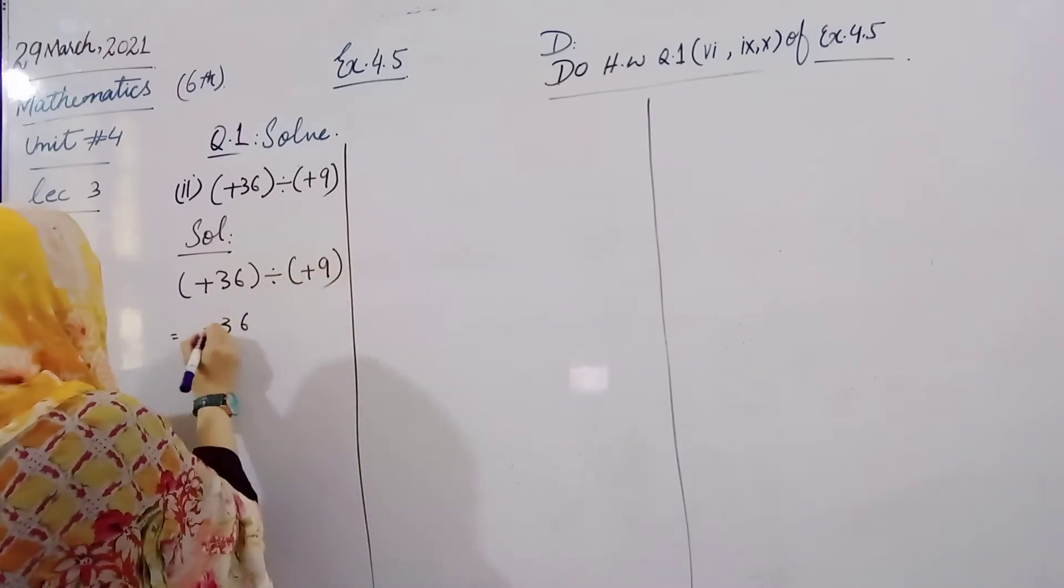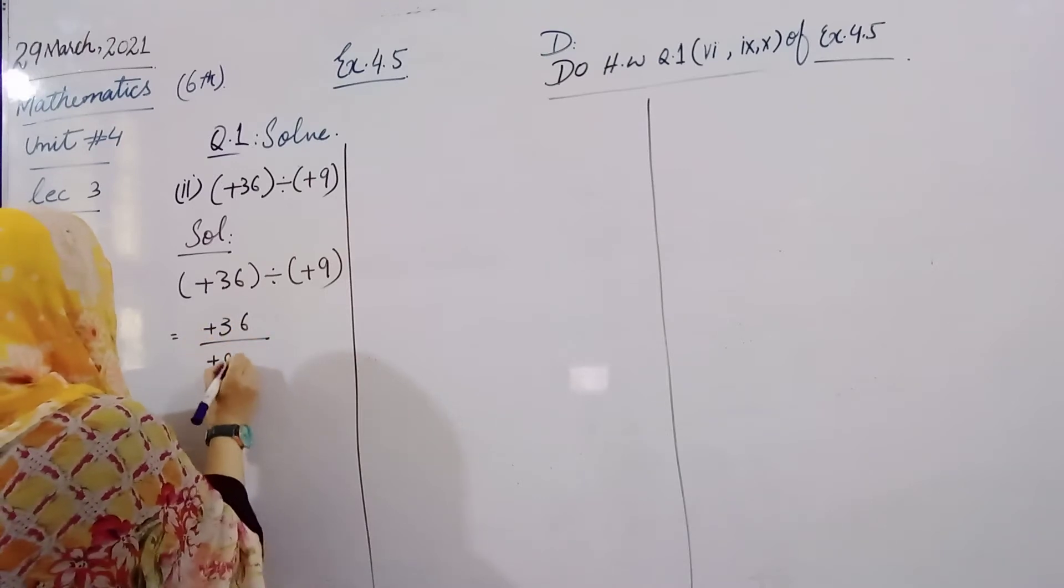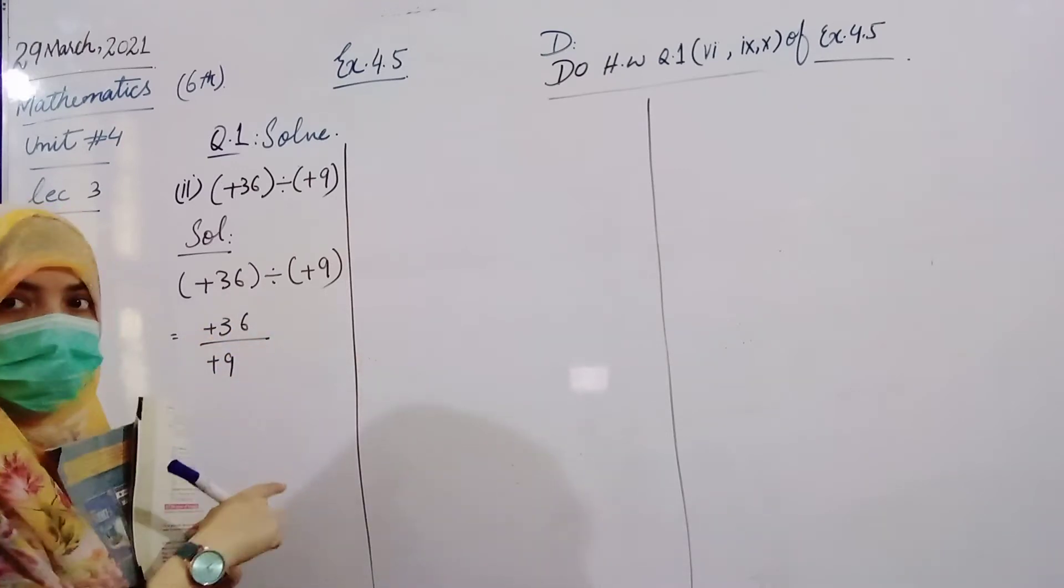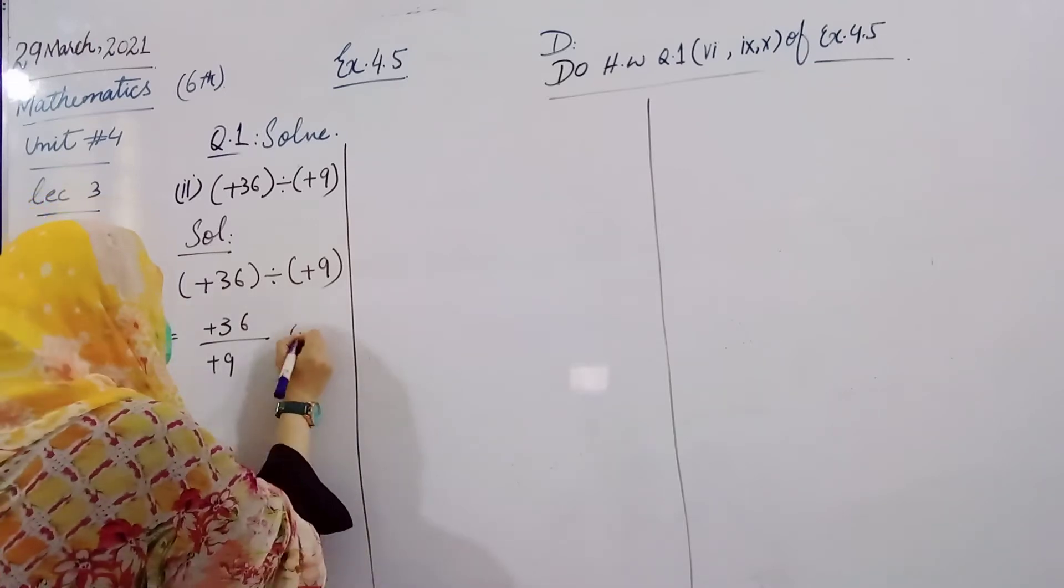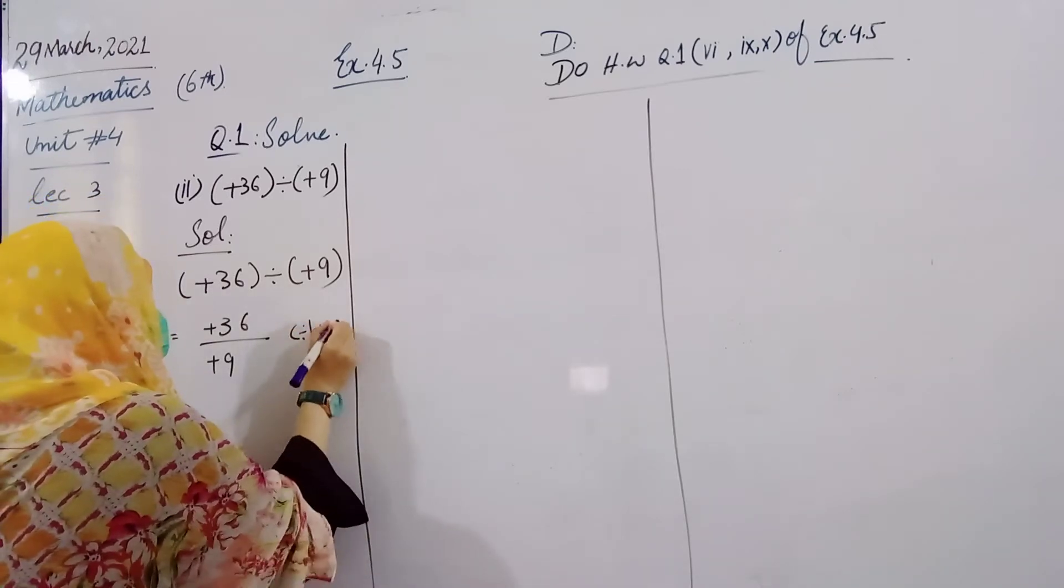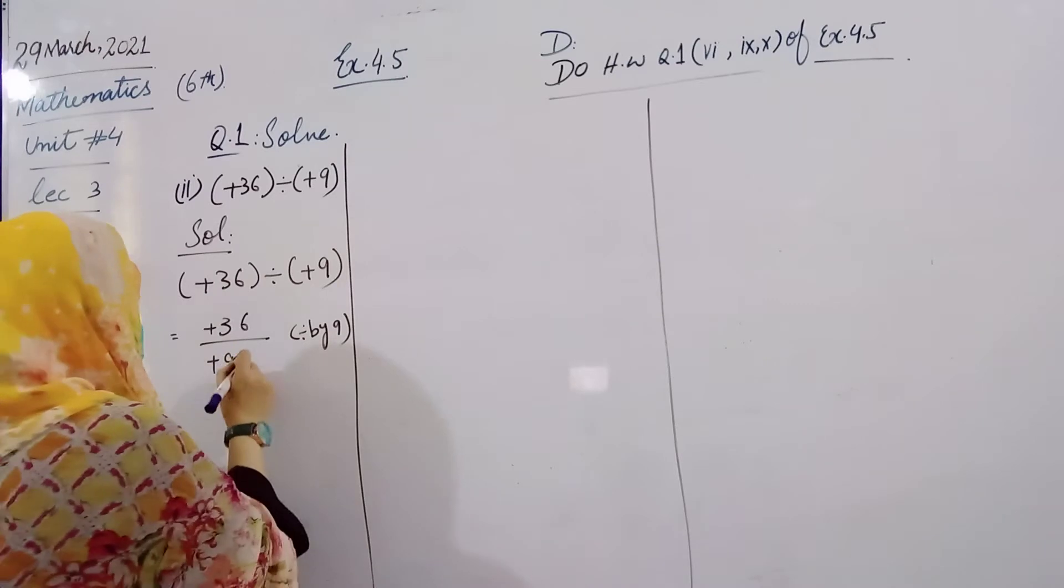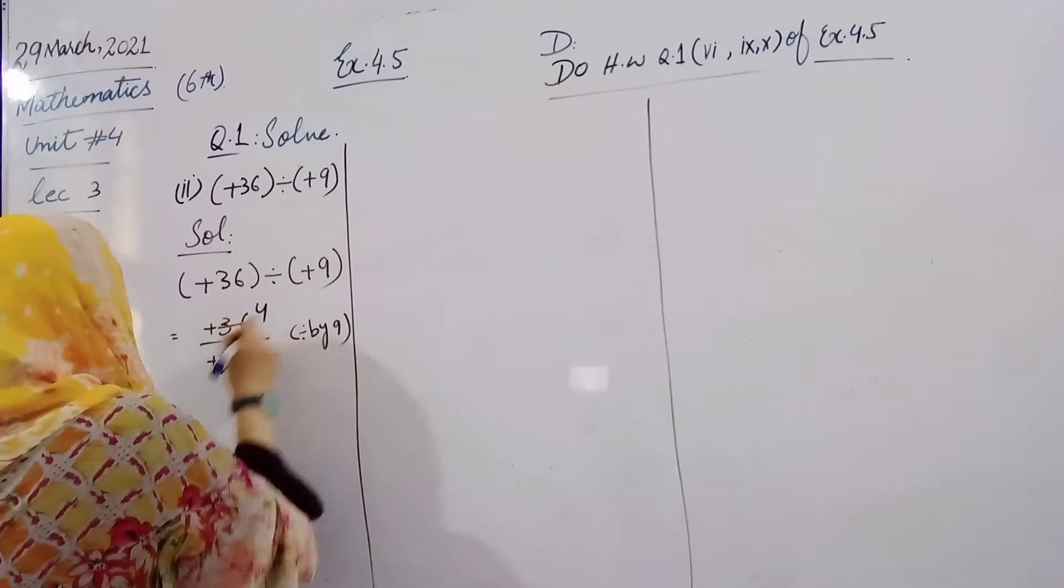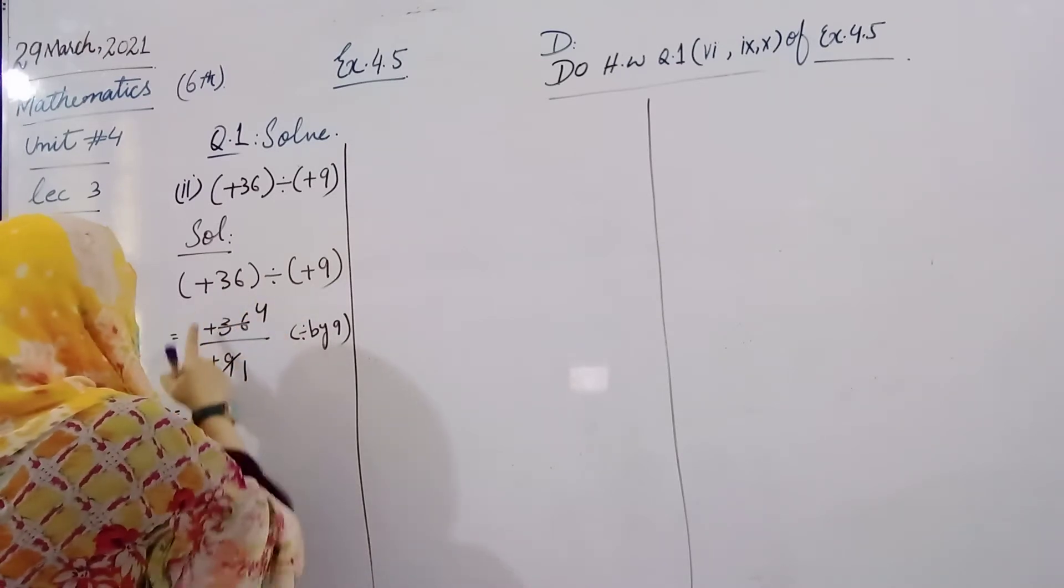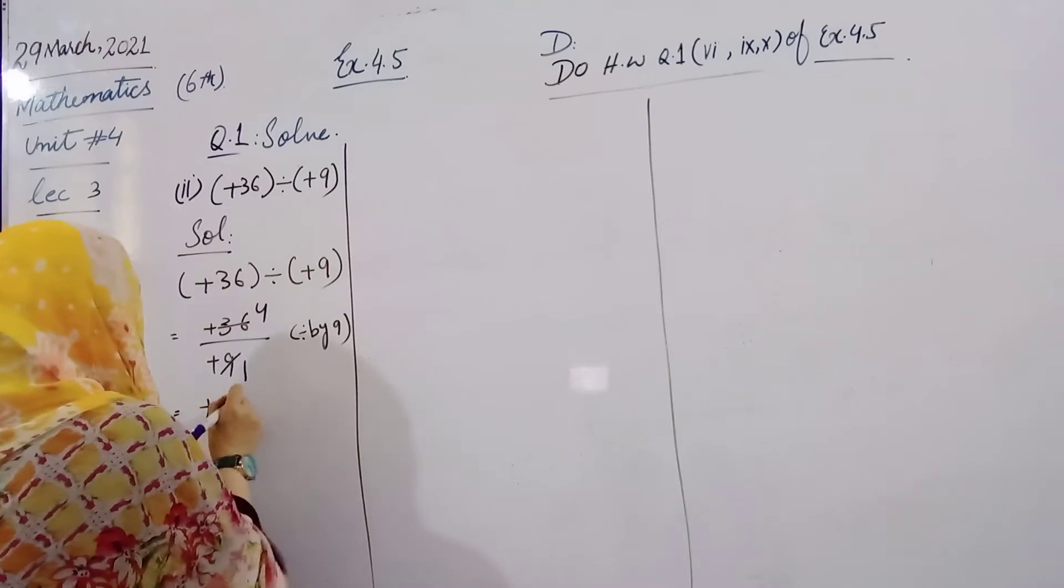Now we will divide plus 36 by plus 9. If we divide 36 by 9, it goes 4 times. 9 times 4 is 36. The answer is plus 4.